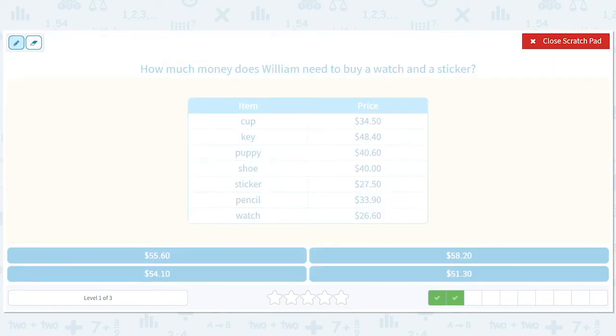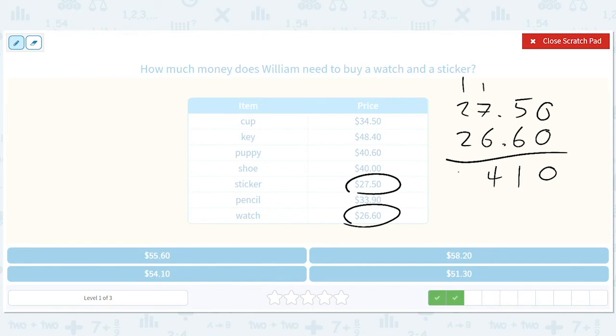Now we want a watch and a sticker. I actually could see buying that combo of things, I like both of those things. So we have $27.50, $26.60. 0, 1, put a 1 here, 4, put a 1 here, 5. So it should cost $54.10 to buy this watch and this sticker. I bet they have sticker watches at this point.